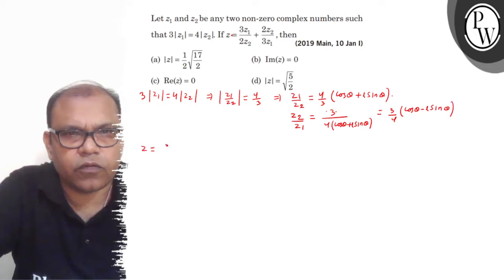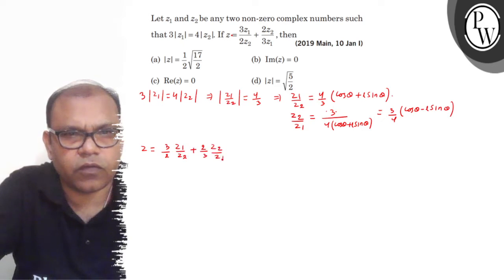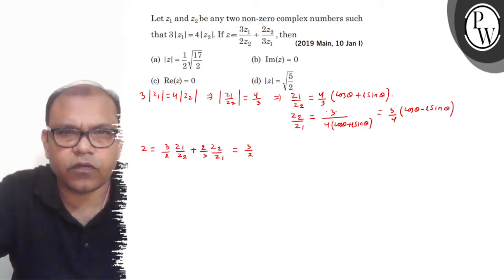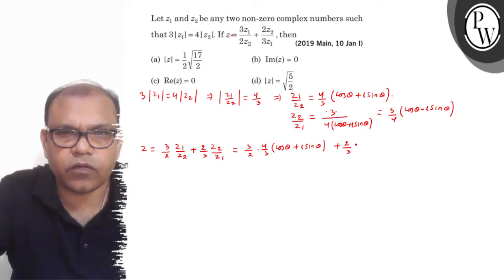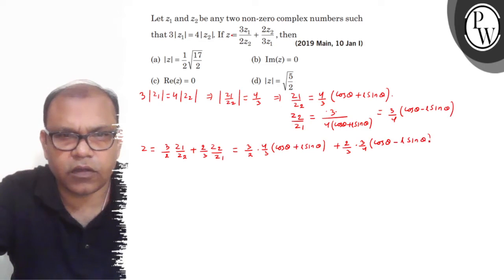So Z equals 3 by 2 times Z1 over Z2 plus 2 by 3 times Z2 over Z1, which becomes 4 by 3 (cos θ + i sin θ) plus 2 by 3 times Z2 over Z1, where Z2 over Z1 equals 3 by 4 (cos θ − i sin θ).